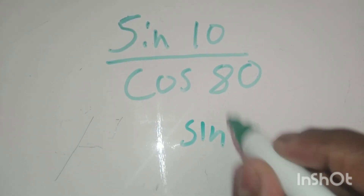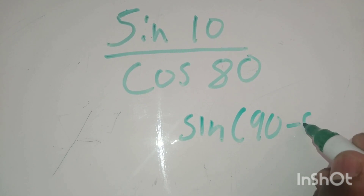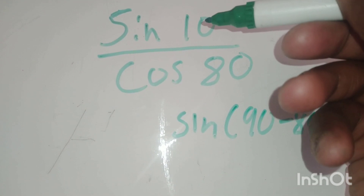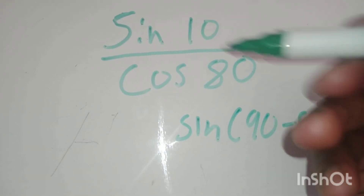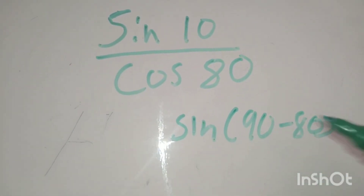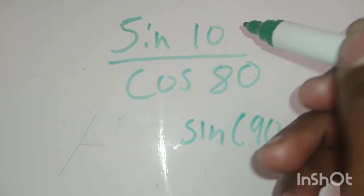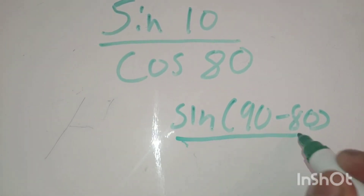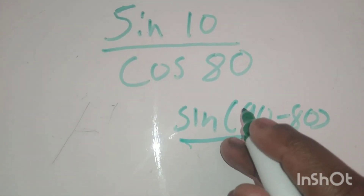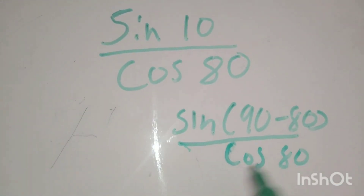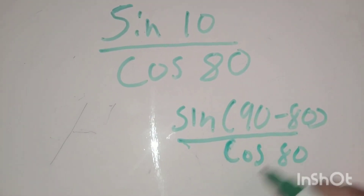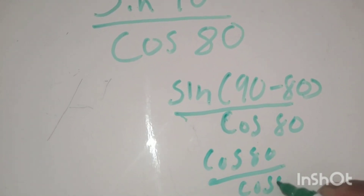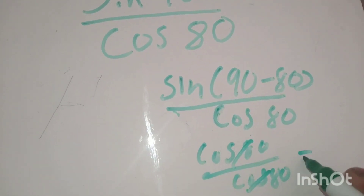If I change the top, sin(10) is the same as sin(90 minus 80). Make sure it gives you 10 back — a common mistake is saying 90 minus 10, but 90 minus 10 is 80, not 10. Make sure you change what it looks like; 90 minus 80 is still 10. So we have sin(90 minus 80) over cos(80). Since sin(90 minus theta) is cos(theta), it becomes cos(80) over cos(80), which cancels and gives you 1.